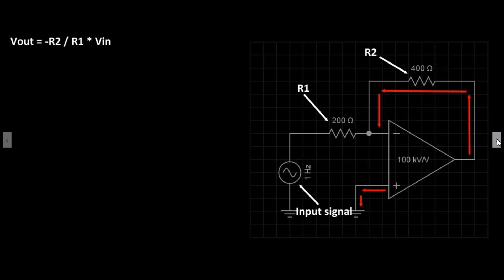Voltage out equals negative R2 divided by R1 multiplied by the voltage in. So firstly we need to calculate negative R2 divided by R1. The values are negative 400 divided by 200 which equals negative 2. Negative 2 multiplied by 10 volts peak to peak equals negative 20 volts peak to peak.